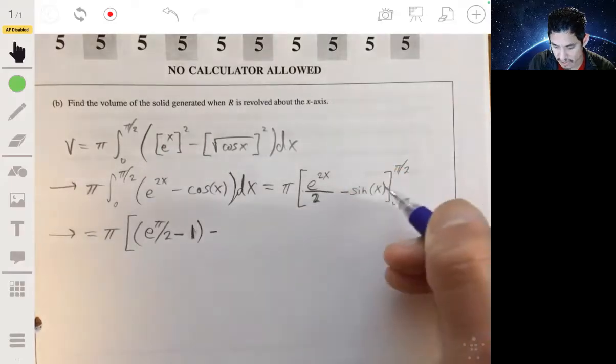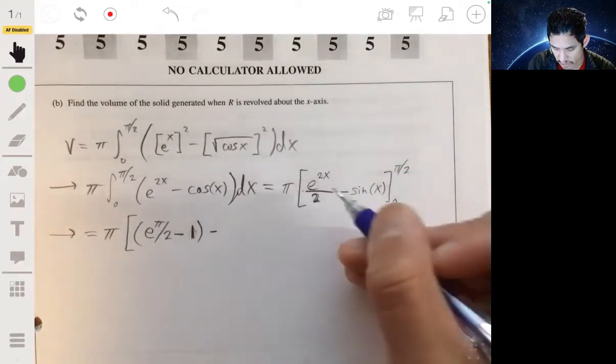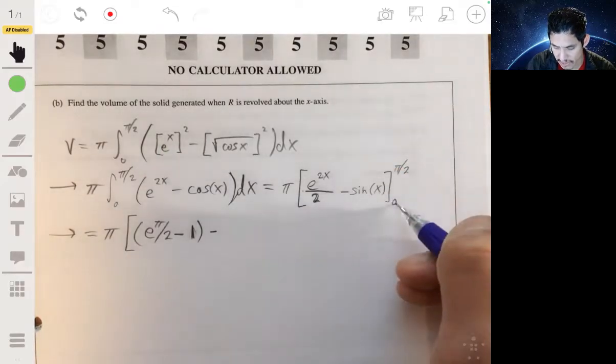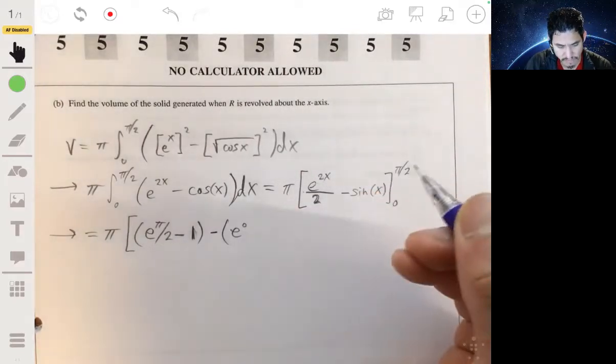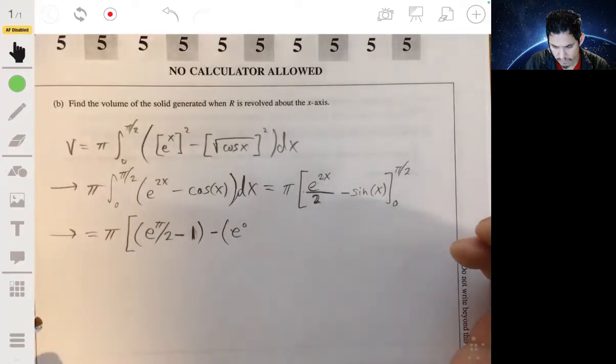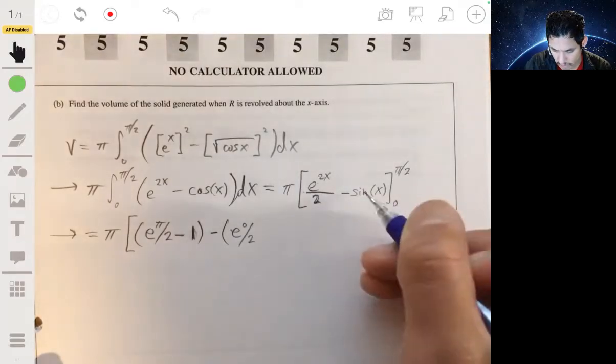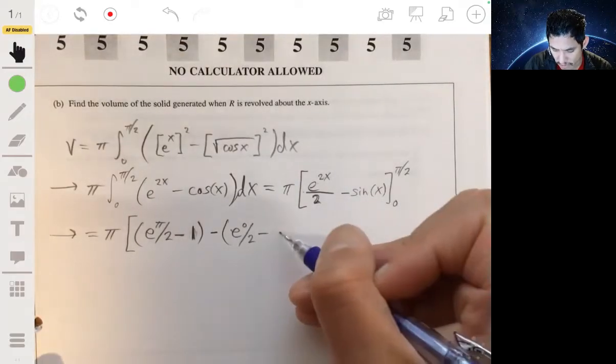And then minus e^(2·0), or e^0 evaluated at zero, so minus e^0 over 2, minus sine of zero, and that's zero.